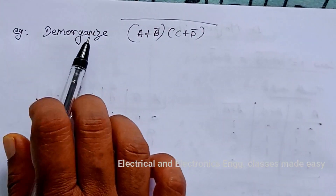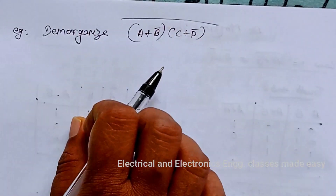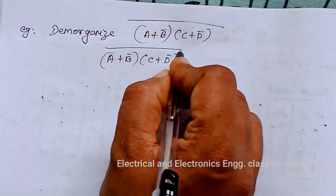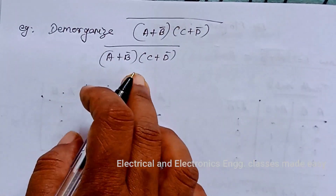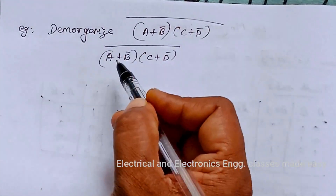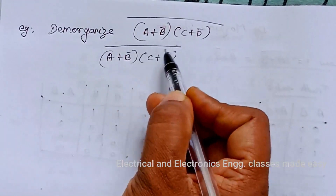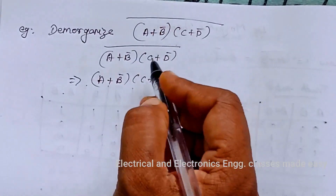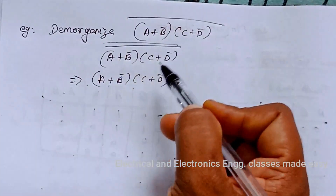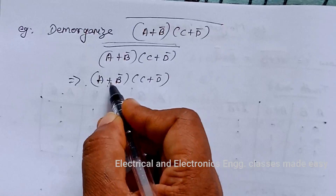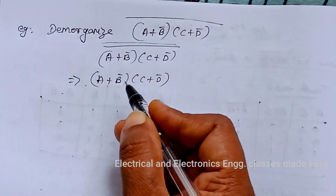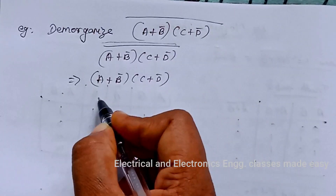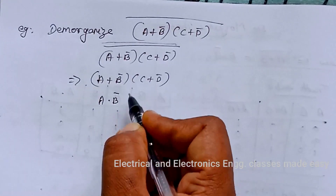Let us do an example: DeMorganize (A plus B bar) into (C plus D bar), the whole bar. The given function is (A plus B bar) dot (C plus D bar), whole bar. In the first method, the first step is to complement the entire function. When we complement the entire function, the outer complement is cancelled, so we get (A plus B bar) dot (C plus D bar). Now change ANDs to ORs and ORs to ANDs: this AND is changed to OR.